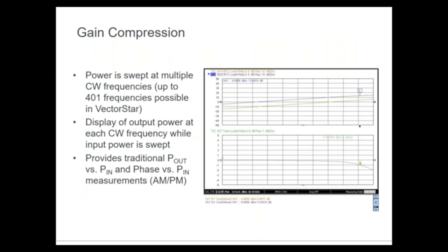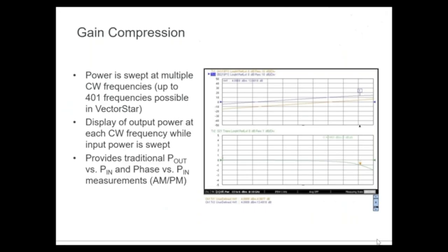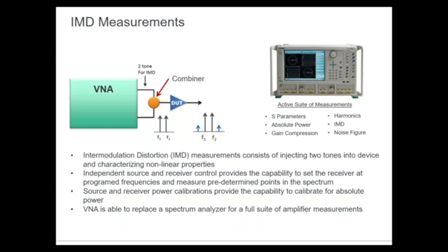Gain compression: here we're sweeping power as opposed to frequency. The x-axis becomes power and the y-axis is absolute power measured by our receivers. We sweep power from one level to another, looking at linearity at the output side, comparing the input sweep with the output sweep. Where the output curve starts to compress by 1 dB, we capture the gain compression point. We can also do the same with phase — AM and PM measurements as a function of input power.